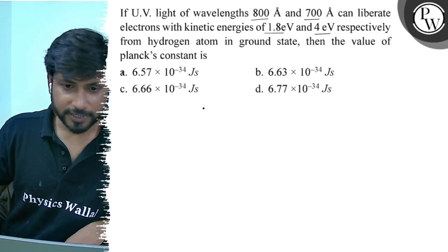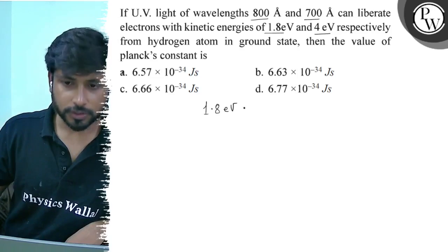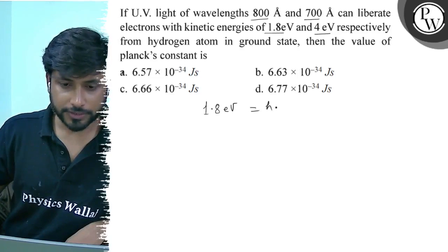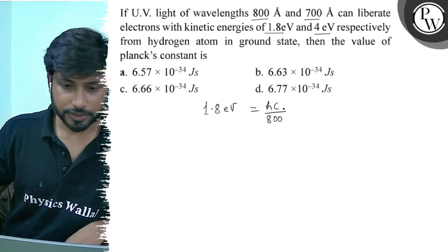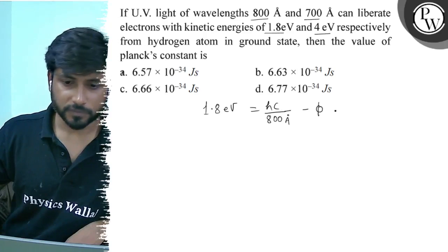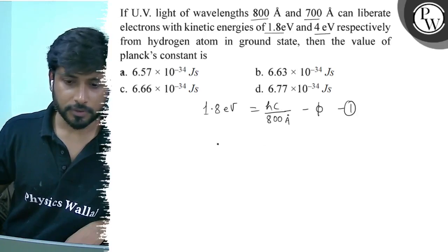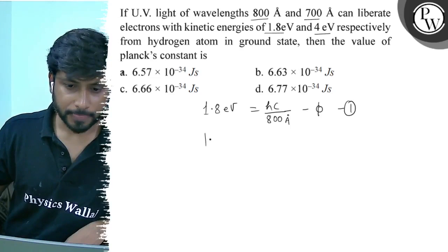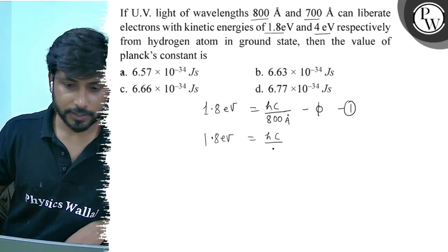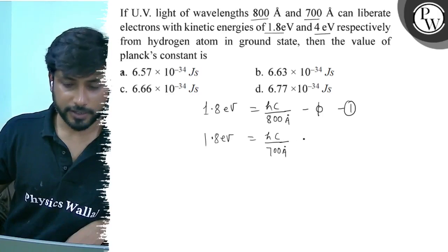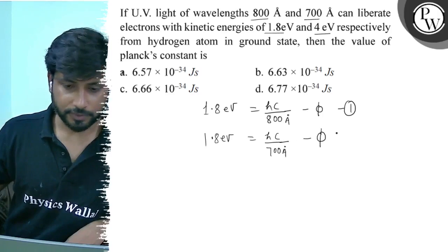So the value of Planck's constant: in the first case, KE max equals 1.8 electron volt equals hc divided by 800 angstroms minus phi. In the second case, KE max equals 4 electron volt equals hc divided by 700 angstroms minus phi.